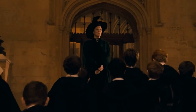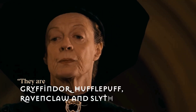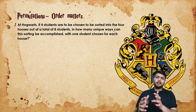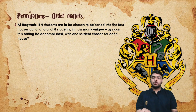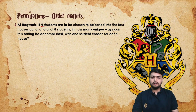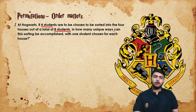Welcome to Hogwarts — you must be sorted into your houses: Gryffindor, Hufflepuff, Ravenclaw, and Slytherin. In this question, you have to select 4 students out of 8 students and put them into the 4 houses. We know the 4 houses at Hogwarts: Hufflepuff, Ravenclaw, Gryffindor, and Slytherin.